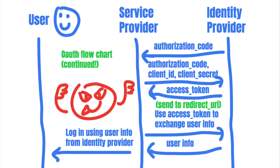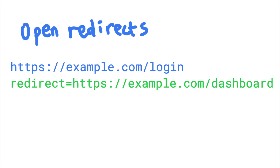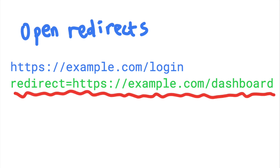So how can attackers compromise this process and log in as someone else? If the attacker can steal the access token of another user, it can trick the identity provider into giving the service provider another user's information. Sites often have HTTP or URL parameters that cause the web application to redirect to another URL without any user action. Open redirects are a type of vulnerability that happens when an attacker can manipulate the value of this parameter and cause users to be redirected off-site.